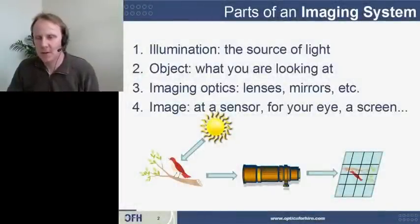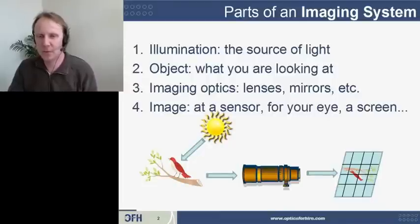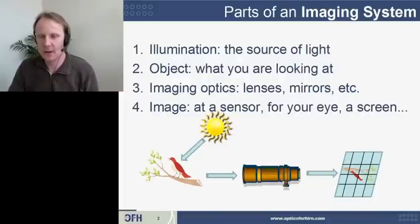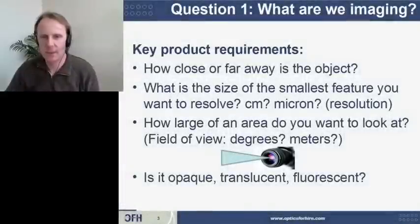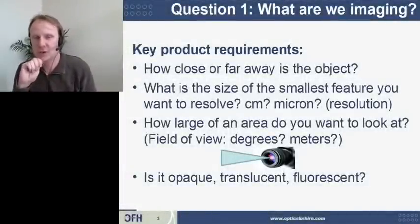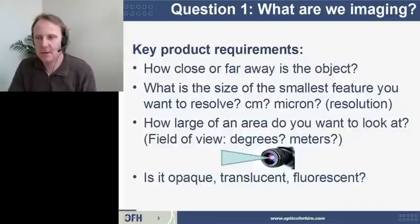The basic parts of an imaging system that you need to consider are: first, the source of light that is lighting the scene, the type of illumination. Second, the object that you're looking at. Third, the imaging optics that are used — the lenses or mirrors. And fourth, how the image should appear on the sensor or at your eye. With that as a background, the first question we ask is: what is it that we're collecting an image of?